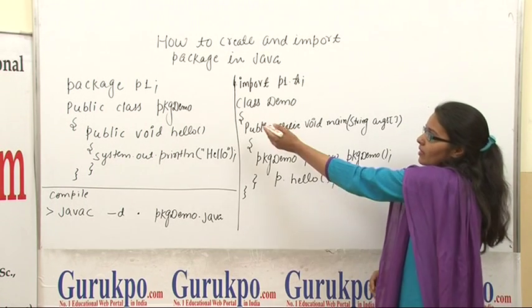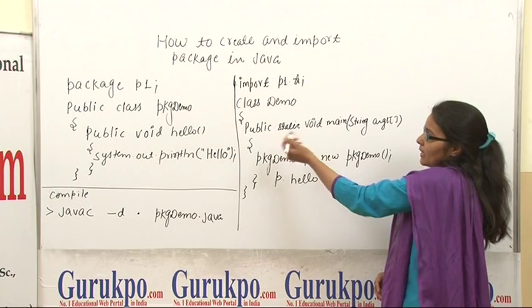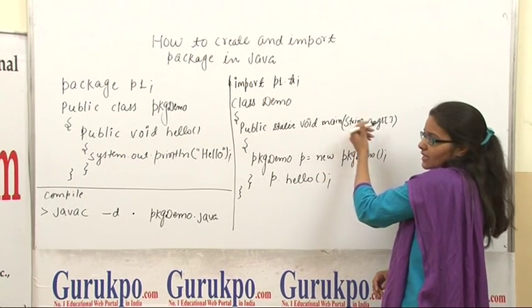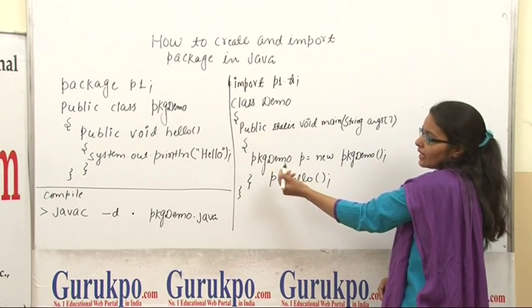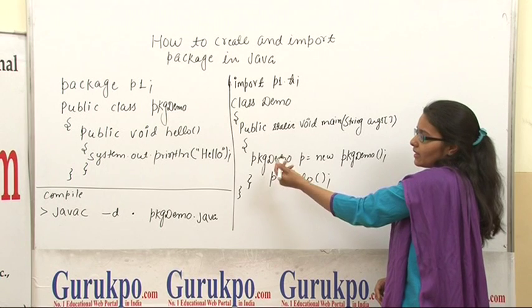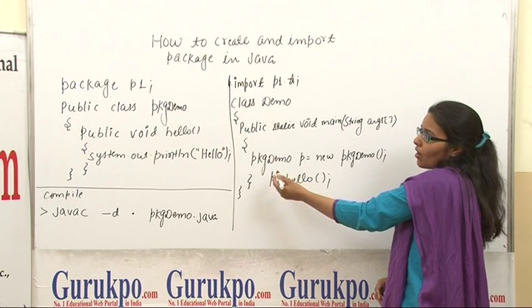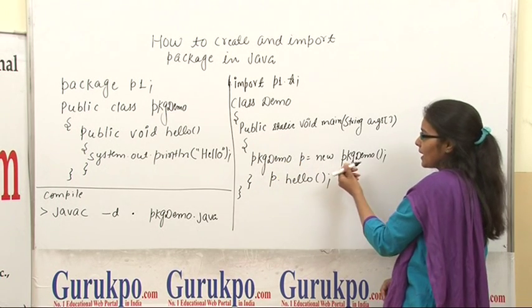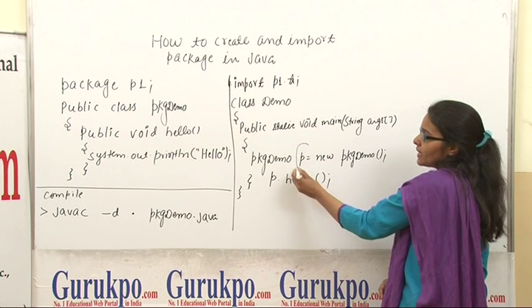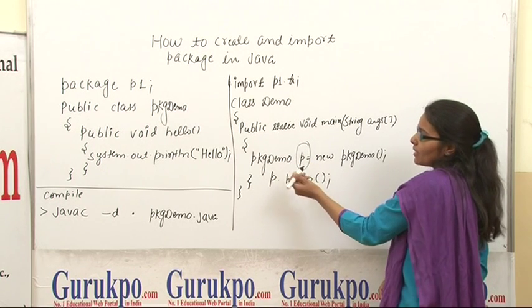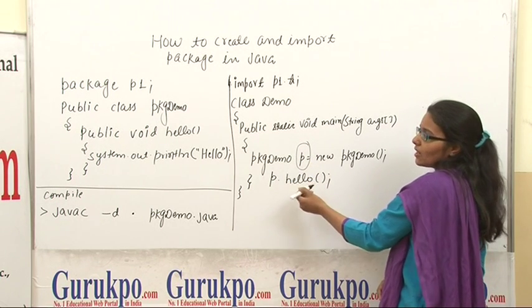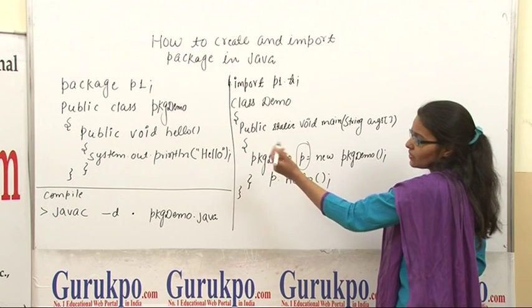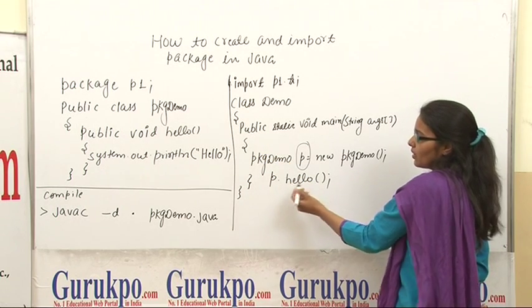Now we have a class Demo here with the public static void main(String[] args) main method. We will create an object of the PackageDemo class: PackageDemo p = new PackageDemo(). Through this object we can call the method of PackageDemo: p.hello().